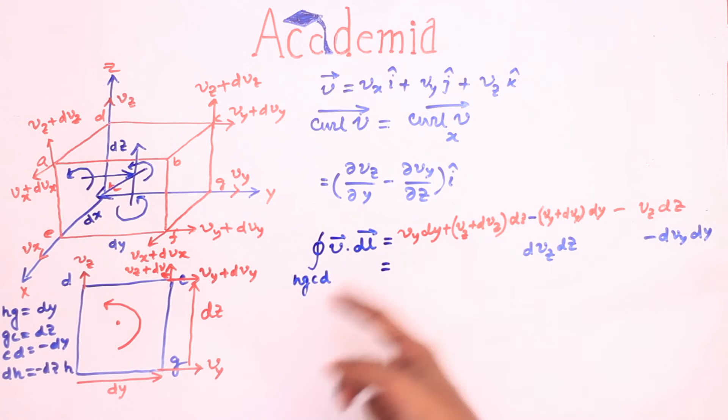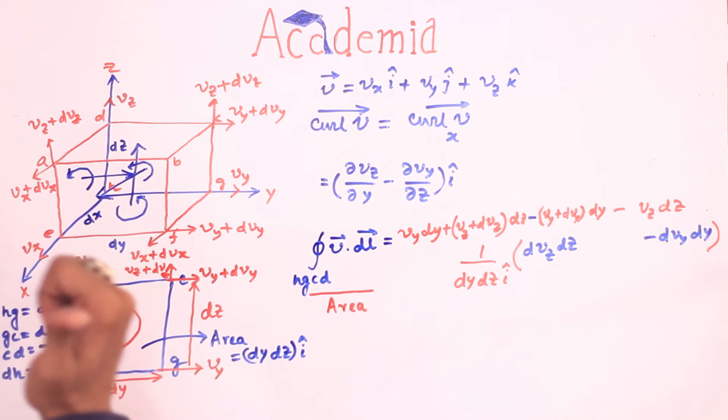If we divide both sides by the area enclosed by this line hgcd, the area being dy dz i cap, then it becomes this. You may wonder why have we taken area dy dz i cap. It's because area is a vector quantity with a direction normal to the surface. Since the area is oriented in anticlockwise direction, so by right hand screw rule, the direction is upward that is coming out of the board which is i cap in this case.